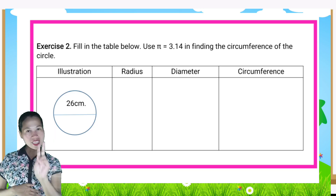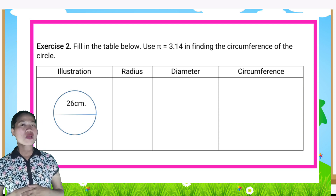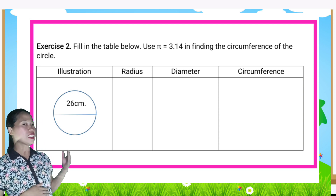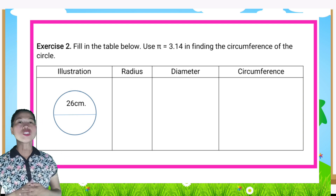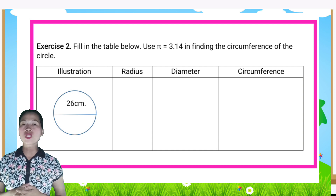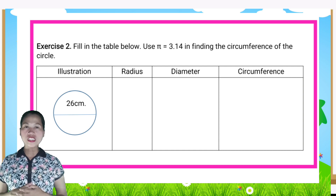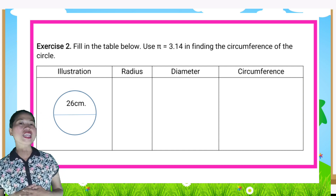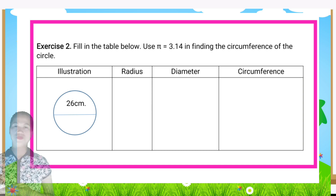For Exercise 2, fill in the table. Use π = 3.14 in finding the circumference of the circle.